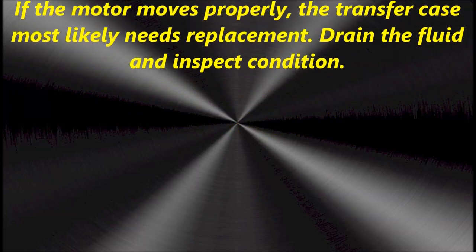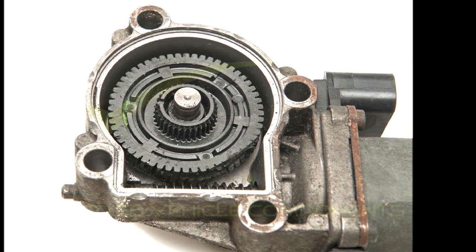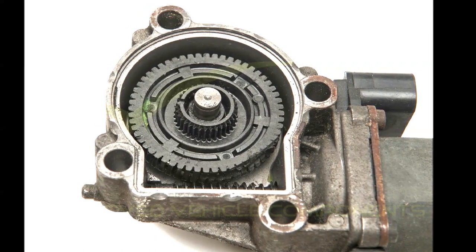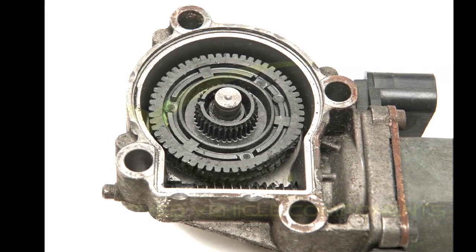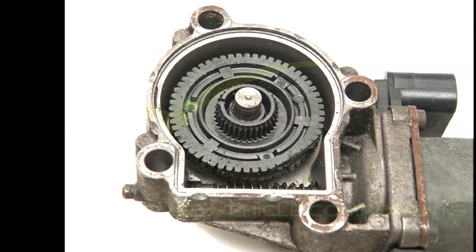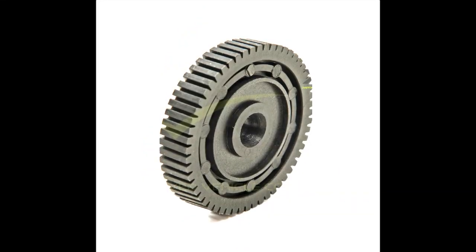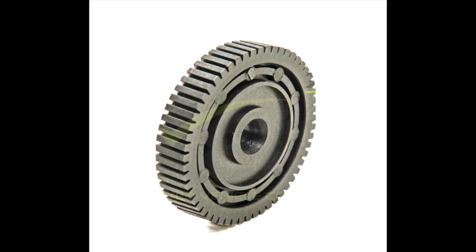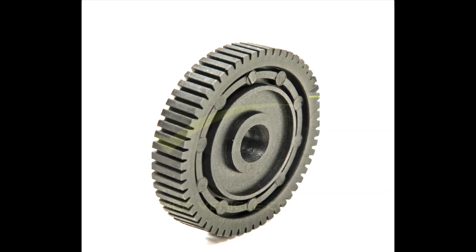As it turned out in this particular vehicle, it was the plastic gear, as you can see on screen. We replaced the gear — it was worn out. We don't have a picture of the worn out gear, but it was pretty worn out. The actual transfer case unit came off when the shop called me in. They had taken it off and started taking it apart, and I said don't do that before we take a look at the motor and all that.